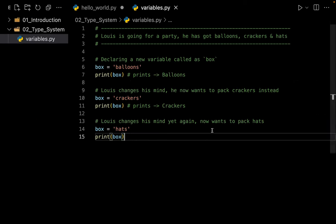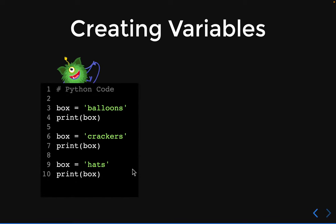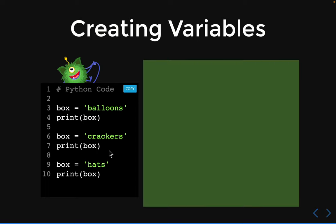Now let's have a look at what's happening behind the scenes. We created just one variable called box, but assigned the values balloons, crackers, and hats to the same variable. Just imagine the green area is the memory of your PC. Python reads all of your source code, and as soon as it comes across 'box = balloons', Python creates the variable in memory and assigns the value of balloons to it.